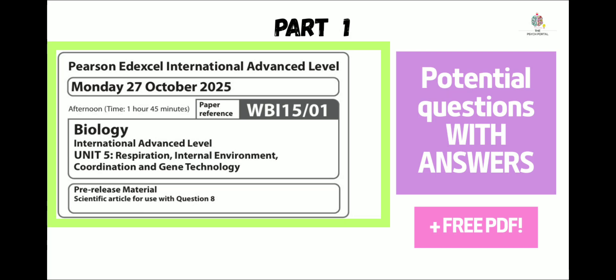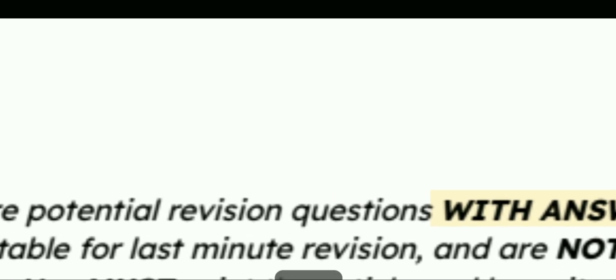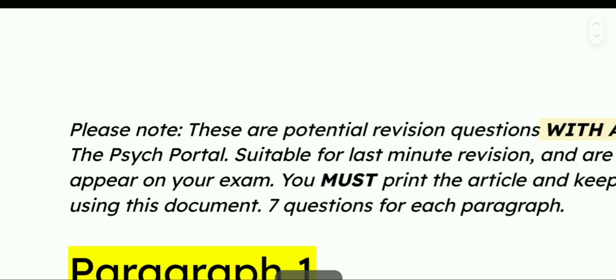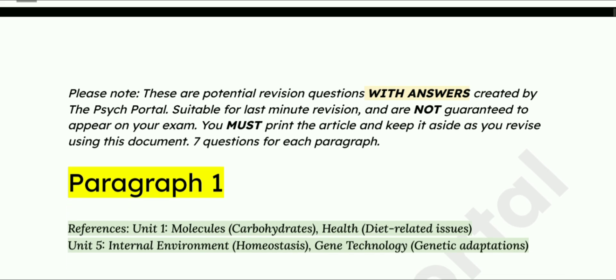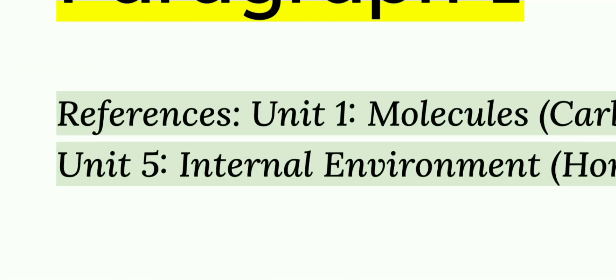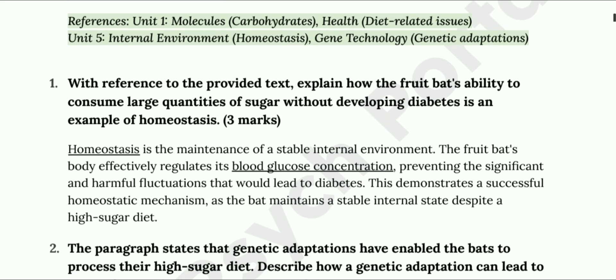Hi everyone, welcome to Psych Portal. Today's video is on the IL Excel Biology scientific article for October 2025. These are just potential questions, so I do not guarantee that these are going to appear on the exams. I hope you have your hard copy beside you, so refer to the article while you practice using this video. I've divided this video into multiple parts, so if you find this helpful make sure to comment for part two, because I'm only doing paragraphs one to three. I've also included topic references, as you can see. There are seven questions for each paragraph, because I didn't want to bombard any of you with so many questions — I'm choosing quality over quantity. Either way, good luck with your revision.